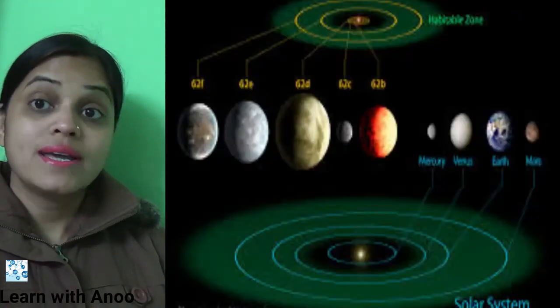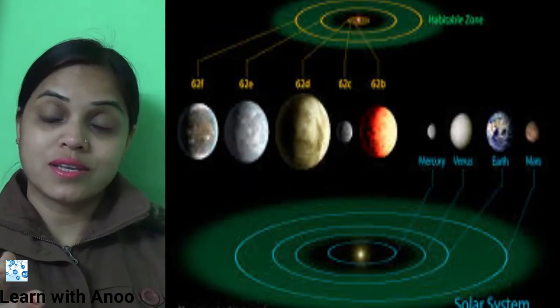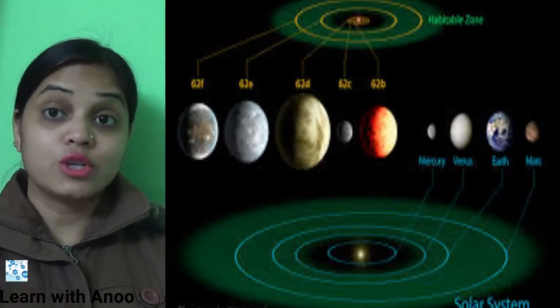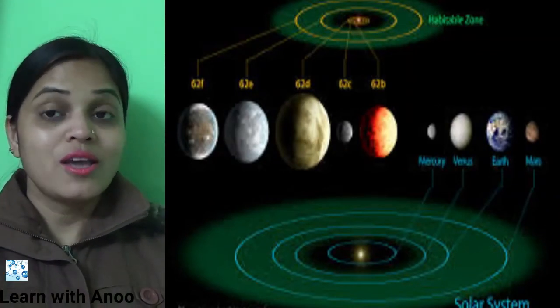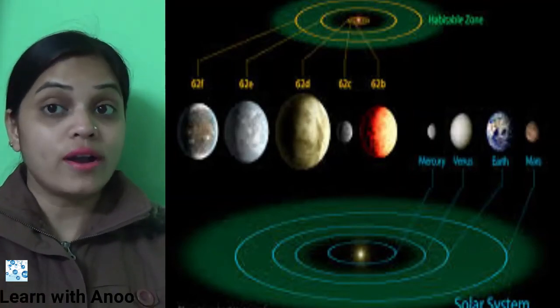This method is called satellite communication. Number two: it is used for weather forecasting. The artificial satellites used for this purpose are called weather satellites. Number three: it is used to study and find out the resources of Earth from outer space.